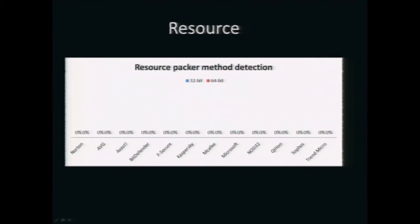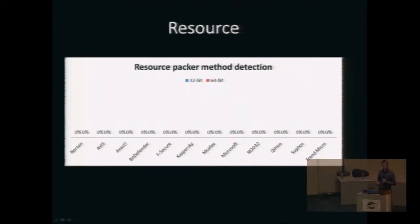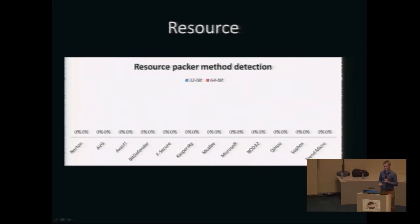What I didn't mention earlier is that for these experiments, we used a stub that immediately calls ExitProcess instead of properly decrypting the original sections and jumping to them, in order to isolate static detection. We really wanted to see what an antivirus can detect just by looking at the raw bytes on disk.